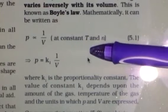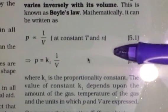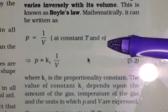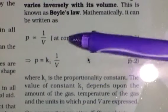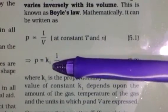At constant temperature and for a fixed amount of gas where number of moles are fixed, P equals K1 times 1 by V, or PV equals K1.